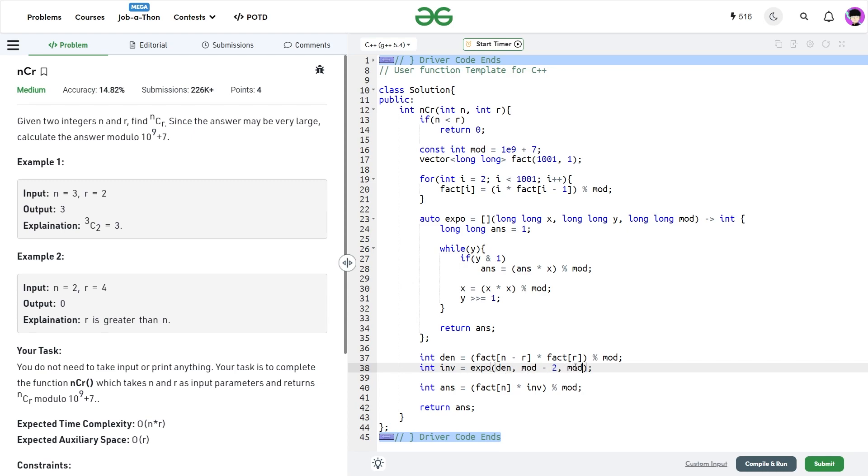At the end what I can do is I can calculate my answer as fact of n into inverse taken modulo, and I can return my answer. Now how do I actually calculate this exponentiation value? I believe this is a simple binary exponentiation function and you'll be able to find it anywhere on the internet.